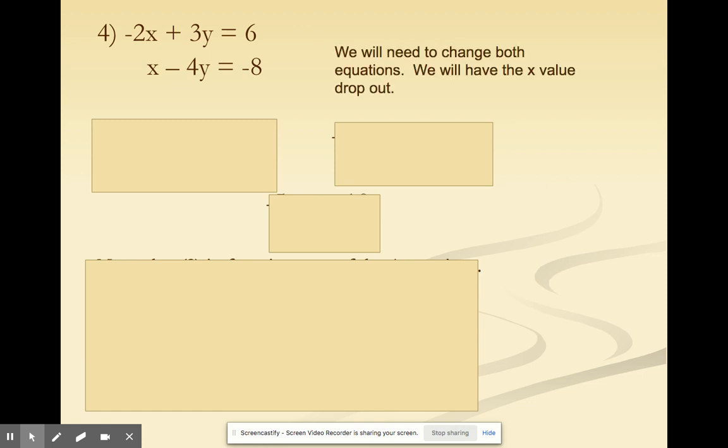Well, step one is that we need to put everything in the same location and order, but that's already done, so we're going to move on to step two. We need to change both equations and we will have the x value drop out. So I'm going to choose x to drop out, and here's why. It's a little bit easier for us to make the x's have the same opposite coefficients.